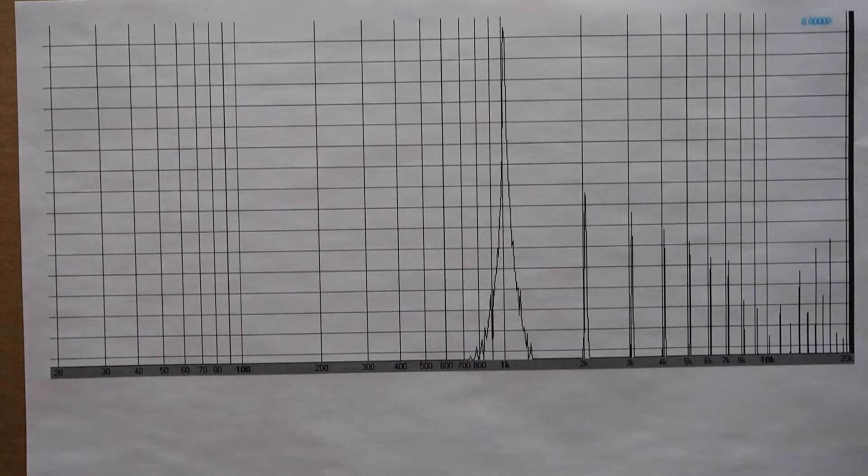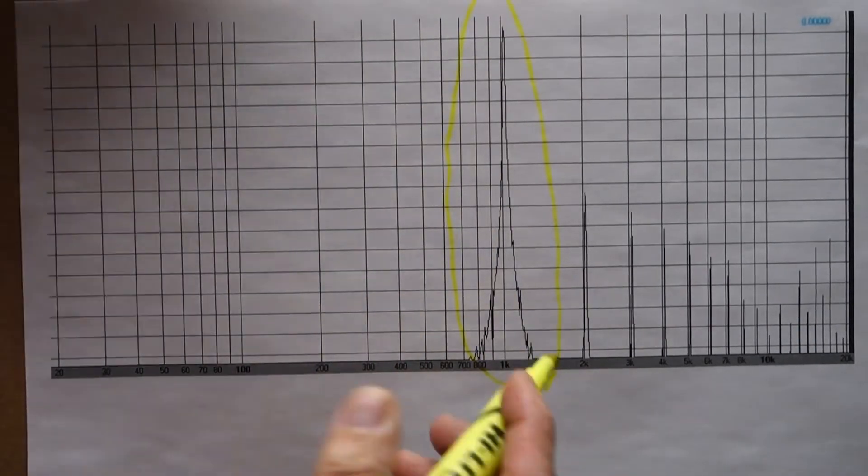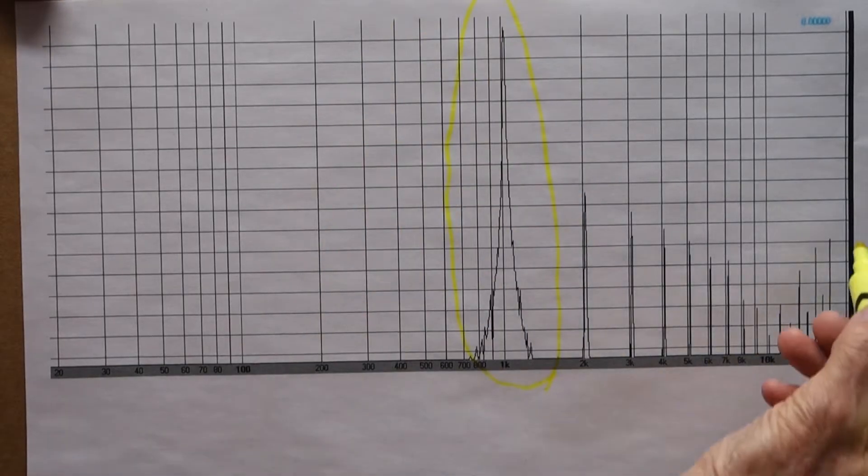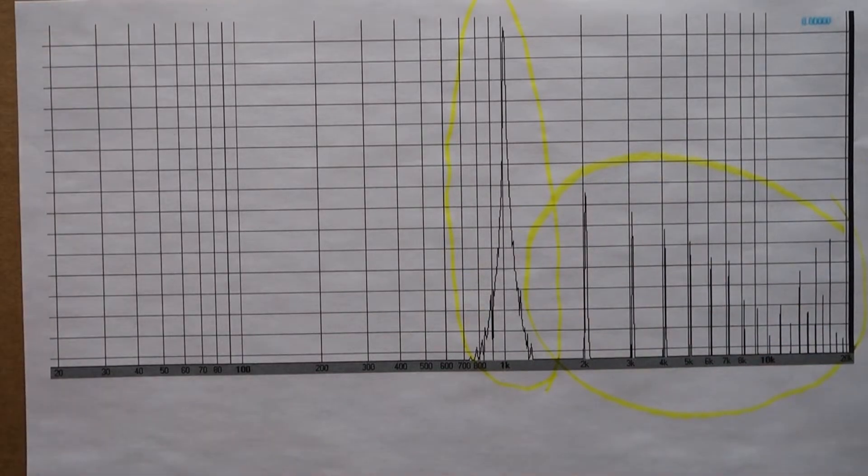And I chose this particular signal source knowing it had a fairly high THD level so we could see this. Now the way most of the older distortion analyzers worked is they used a very steep notch filter to take the fundamental frequency out. And what they simply measured was once the fundamental was notched out, was everything else. Everything else was considered distortion.